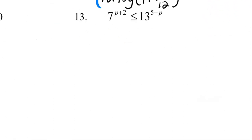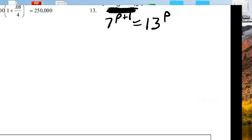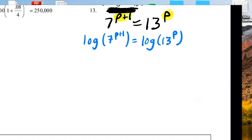The last one I'd like to do before our last topic is Number 13. I had a little typo, so I had to scratch out the old number 13. The issue here is you have a variable on both sides — this is very different than the ones we've solved up to this point. You can't really isolate a base because you have a base on both sides with variables of p on both sides. So the way that we solve this, we're just going to start by logging both sides: log(7^(p+1)) and log(13^p). Then we move the exponent down out in front: (p + 1) times log 7 equals p times log 13.